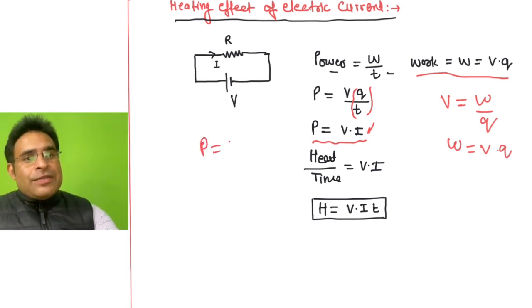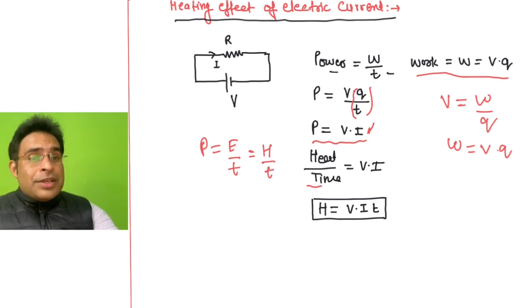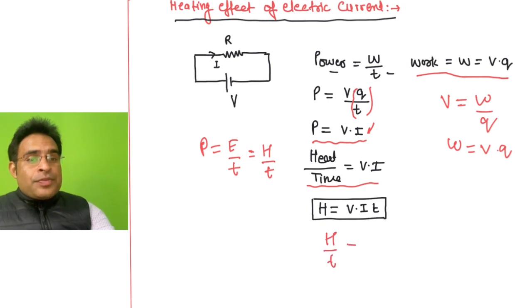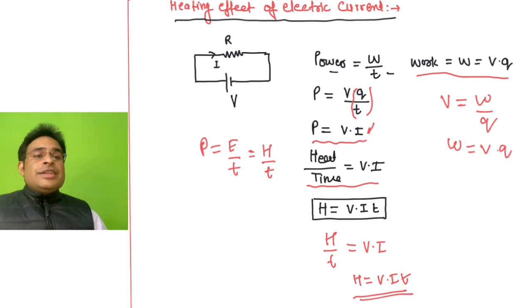Power is equal to V into I. Also, power equals energy divided by time. Heat is also a kind of energy, so heat divided by time is also power. Therefore H/T = V × I, and multiplying T over: H = V × I × T. This is the formula for heat generated in an electric circuit.